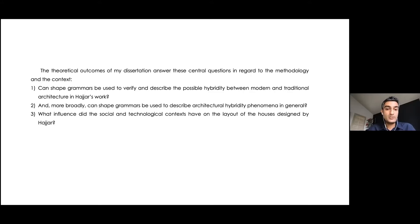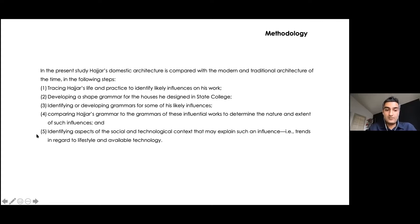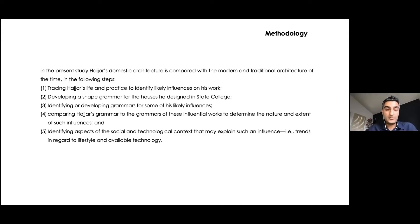The critical questions of my study were: Can shape grammar be used to verify and describe the possible hybridity between modern and traditional architecture in Hajar's work? And more broadly, can shape grammars be used to describe architectural hybridity as a phenomenon in general? And what influence did the social and technological contexts have on the layout of the houses designed by Hajar? To answer these questions, I studied and analyzed Hajar's life and architecture, developed a shape grammar to understand his architectural language, did the same for likely influences, compared those architectural languages, and identified aspects of social and technological context that may explain such influence.